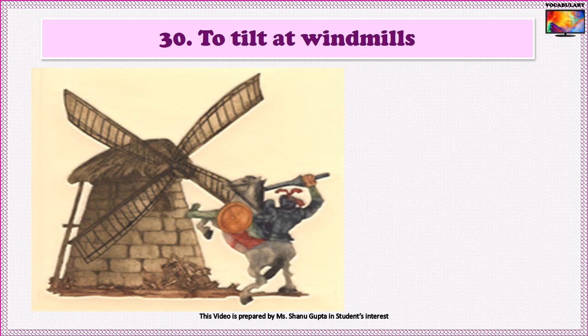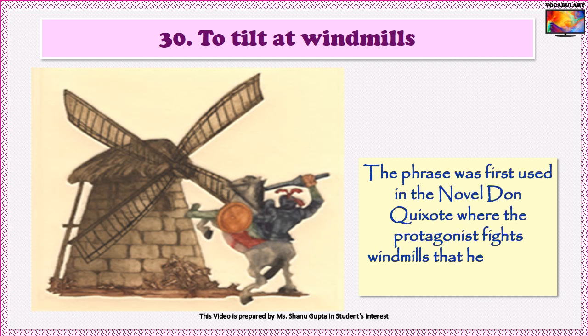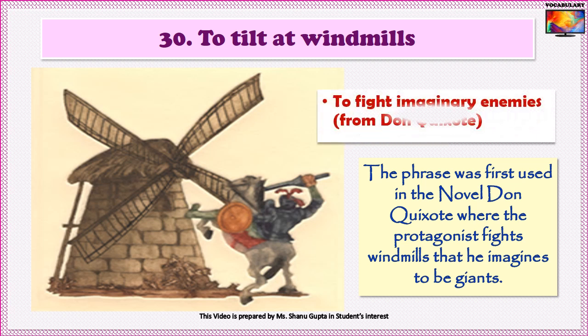And the last idiom in this section is To tilt at windmills. The phrase was first used in the novel Don Quixote, where the protagonist — the main character — fights windmills that he imagines to be giants. The idiom thus means to fight battles with imaginary enemies or unimportant issues.